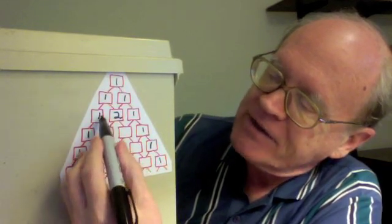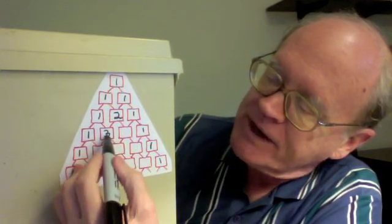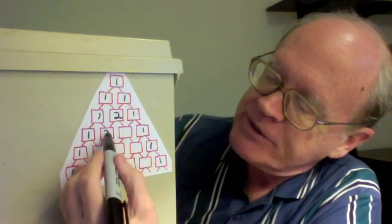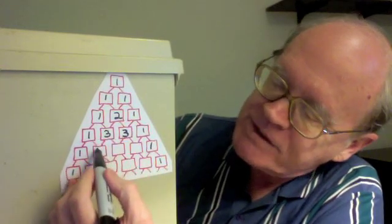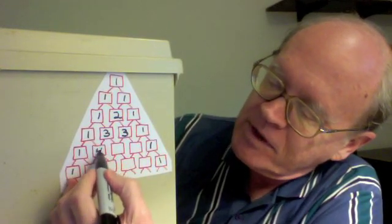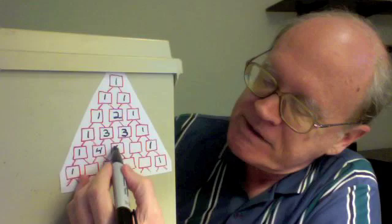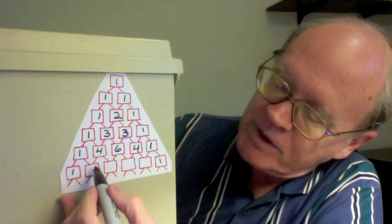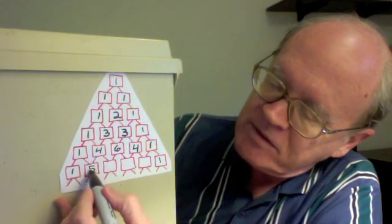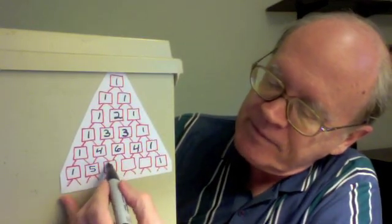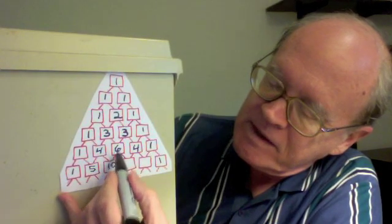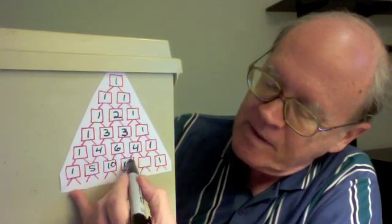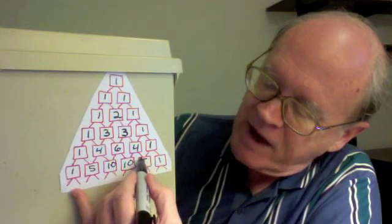what I'm doing is adding the two numbers above to get the new number. 1 plus 2 is 3, 2 plus 1 is 3, 1 plus 3 is 4, 3 plus 3 is 6, 3 plus 1 is 4, 1 plus 4 is 5, 4 plus 6 is 10, 6 plus 4 is 10, 4 plus 1 is 5,